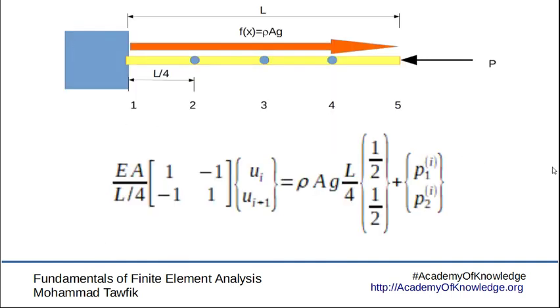So the general element equation will look like this. Again, nothing really changed. Only when you have an element with a concentrated force, you will replace p1i and p2i with the relevant force. For example, here the first element will have R instead of p1i and 0 instead of p2i, while the last element will have 0 instead of p1i and minus P instead of p2i.